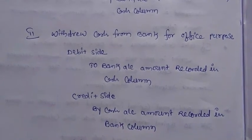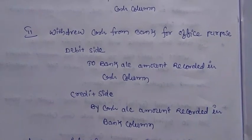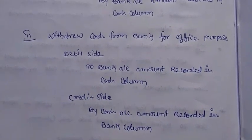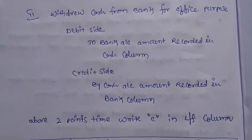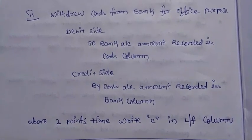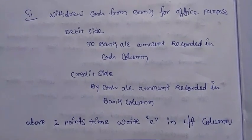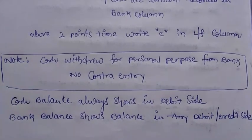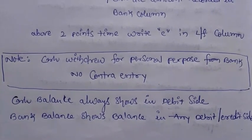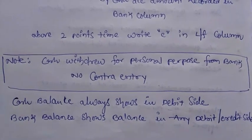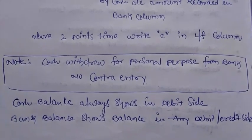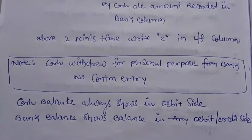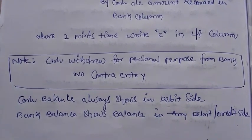Take care about this second point. For cash withdrawn from bank for office use: debit side 'To Bank' — amount recorded in the cash column; credit side 'By Cash' — amount recorded in the bank column. In both contra entry cases, always put a 'C' mark in the ledger folio column. Note: if the proprietor withdraws cash from bank for personal purpose, there is no contra entry, as the owner is receiving cash for personal use.